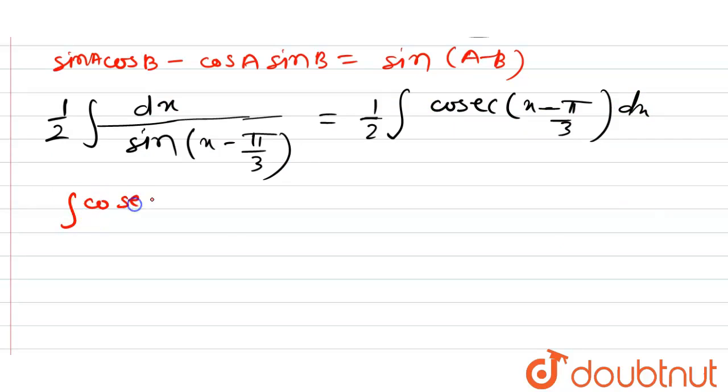Here, integration of cosec x, integration of cosec x dx is equal to log mod of cosec x minus cot x plus c.